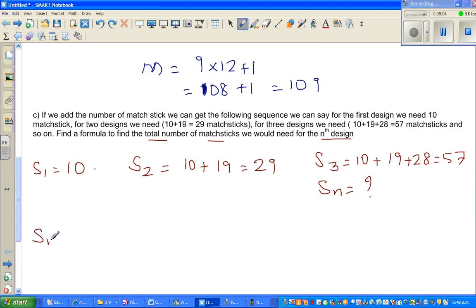Three designs, it is 10 plus 19 plus 28, which is 57. So the question is, if you want to go to Sn, what's the formula? So I'll write the original sequence. S1 can be written as 10 plus 19 plus 10 plus 19 plus 28.